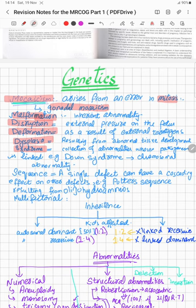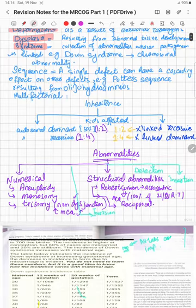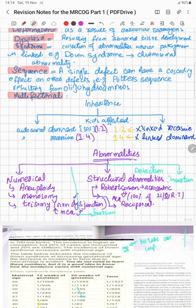A syndrome is a collection of abnormalities whose pathogenesis is linked — for example, Down syndrome and chromosomal abnormalities. The next term is sequence: a single defect that can have a cascading effect on other defects — for example, Potter's sequence, which results from oligohydramnios. Then multifactorial, as the name indicates, is related to multiple factors.